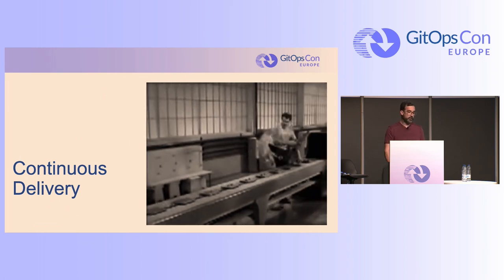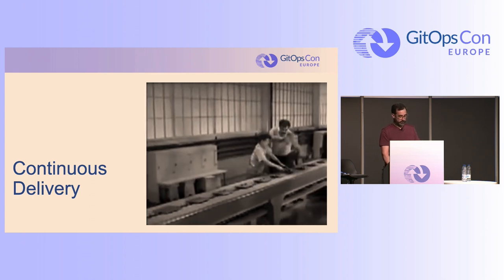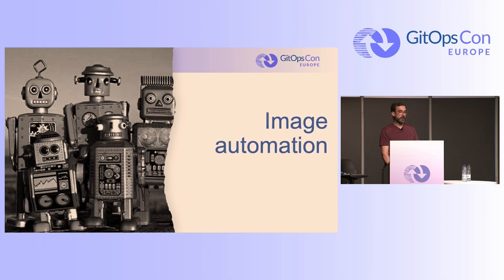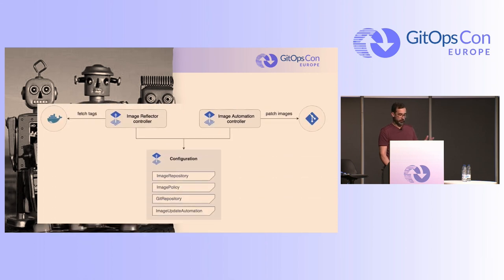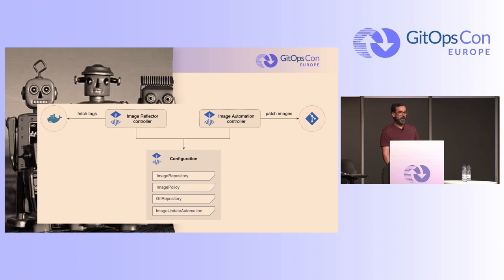How do we continuously deliver our workloads? We use a pretty nice feature of Flux — image automation — which brings two additional controllers. One is the image reflector that keeps fetching the new image tags we are pushing in our CI pipelines, and another that tries to match our image policies with those image tags found on our container registries. If any of those match the image policy with a new tag, a new patch is applied in any Git repo that references that image policy, and then we roll out the new Helm release with the new version.